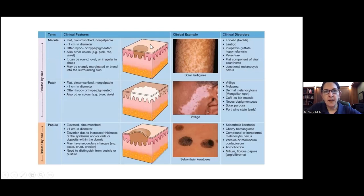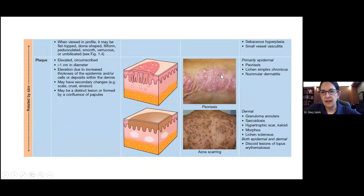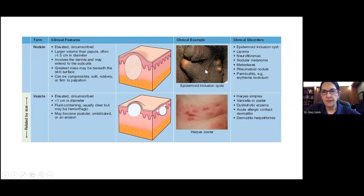Examples: solar lentigines are macules; vitiligo is a larger depigmented patch. Seborrheic keratoses are examples of papules. Psoriasis is an example of elevated plaques in the epidermis, while acne scarring with hypertrophic and keloidal scars represents thickening in the dermis. Cysts are examples of nodules, such as calcified cysts in the scrotum. Herpes zoster or shingles is an example of vesicles and bullae.